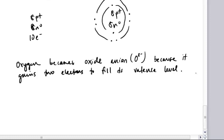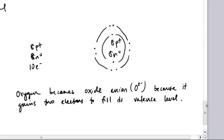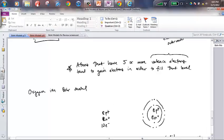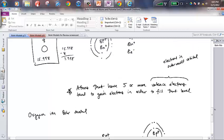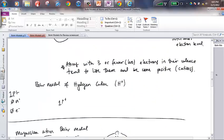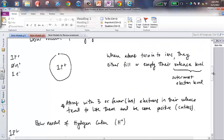We've had a couple of key terms here — anion being one, which indicates a negative ion. Atoms that have five or more valence electrons tend to gain electrons to fill that level, and when you gain electrons the result is becoming a negative ion. The other rule: atoms with three or fewer electrons in their valence tend to lose them and become positive cations. That's it for now, ladies and gentlemen.